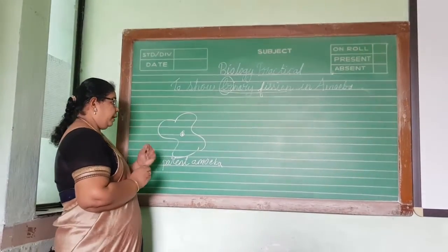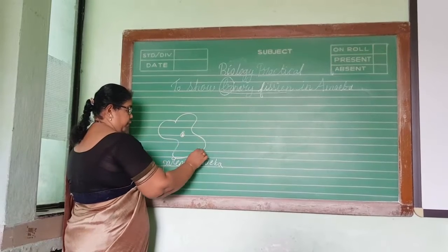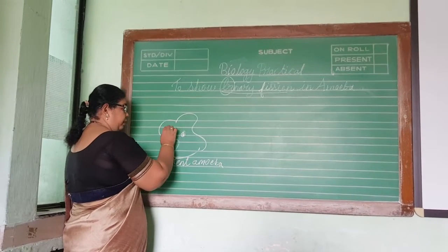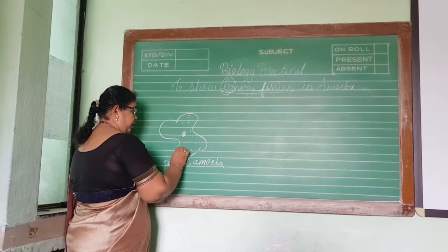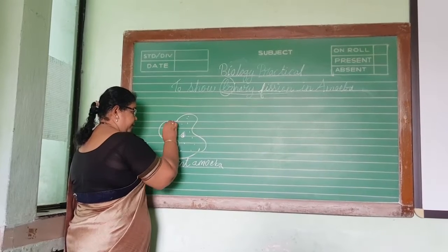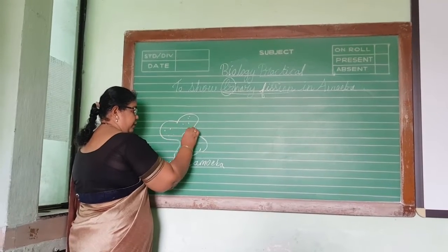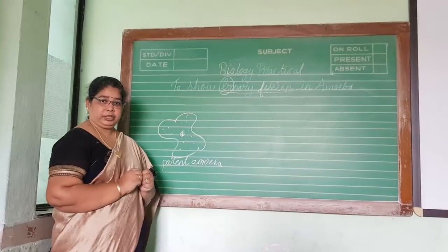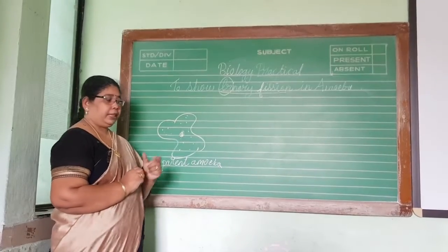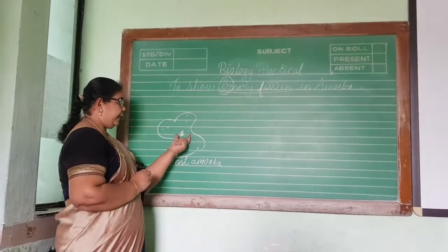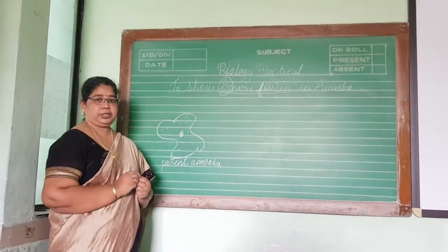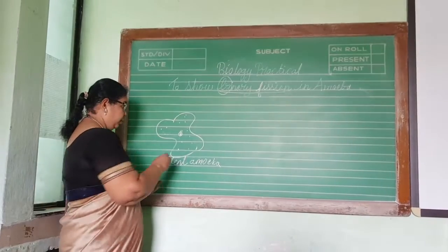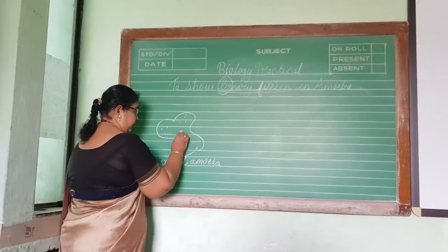This amoeba has some projections called pseudopodia. There will be cytoplasm inside, along with vacuoles. When the parent amoeba matures, the first step is that there will be an elongation in the nucleus. The nucleus is at the center.